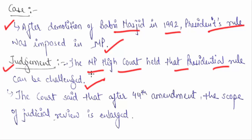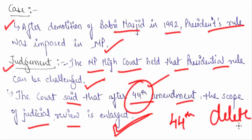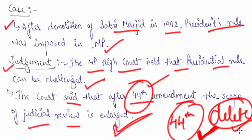In this case, the court gave the judgment that presidential rule can be challenged. The 44th Amendment had deleted the exclusion from the 38th Amendment. The court in the Sundar Lal Patwa case said that after the 44th Amendment, the scope of judicial review is enlarged. The 44th Amendment deleted the 38th Amendment's provision, but did not say that judicial review was available or not — so the court determined that the scope of judicial review is now increased.